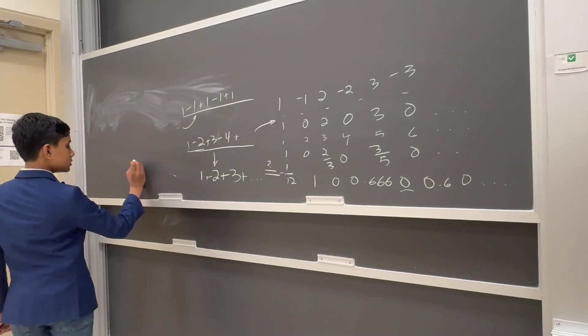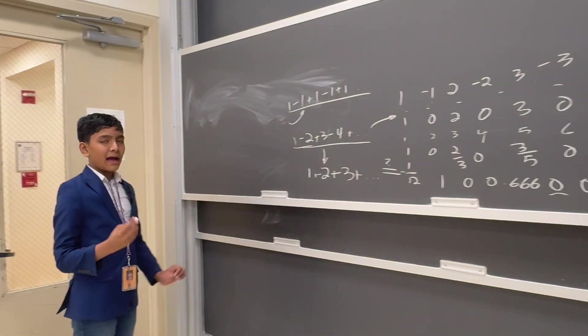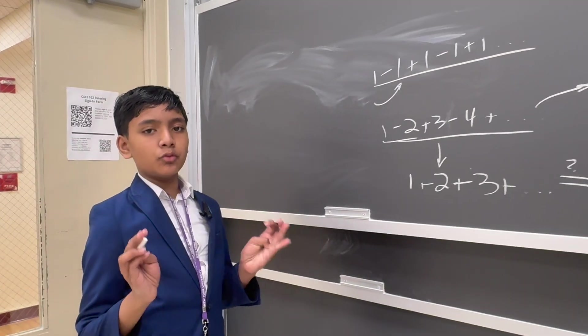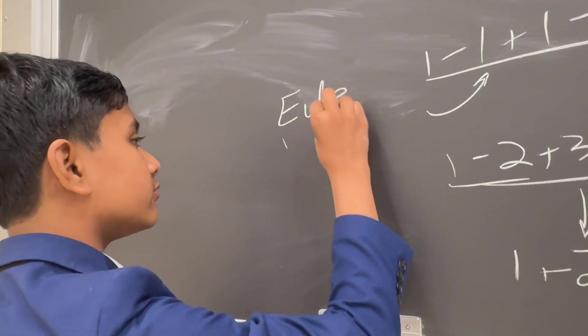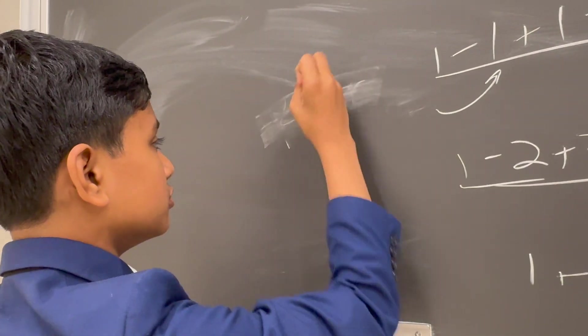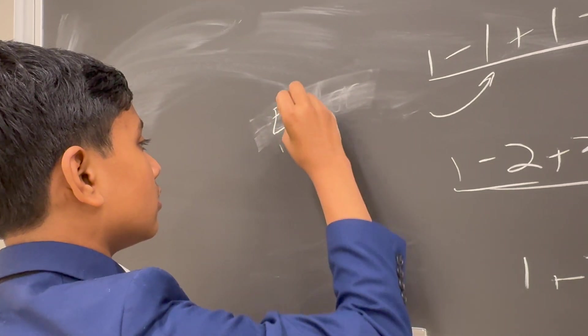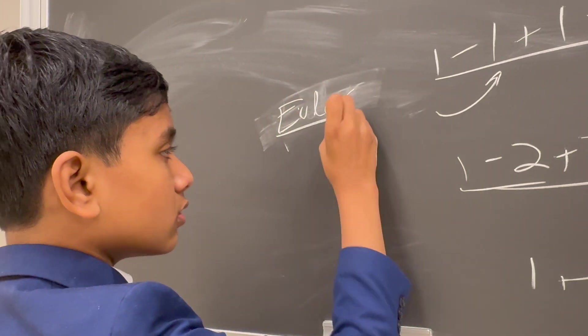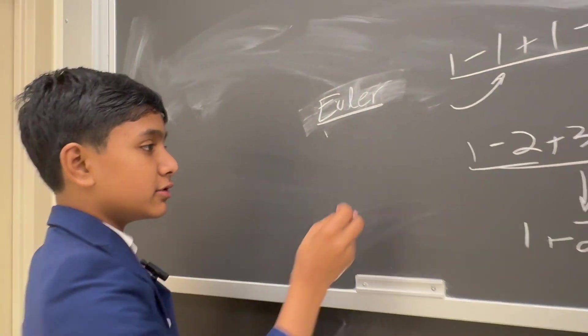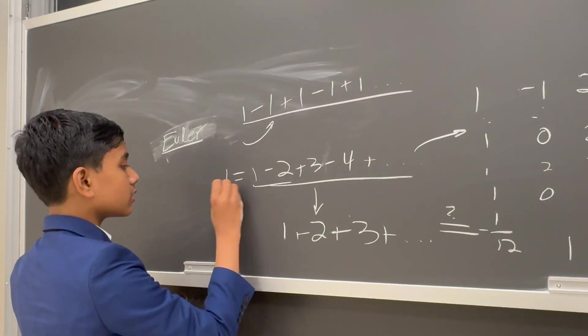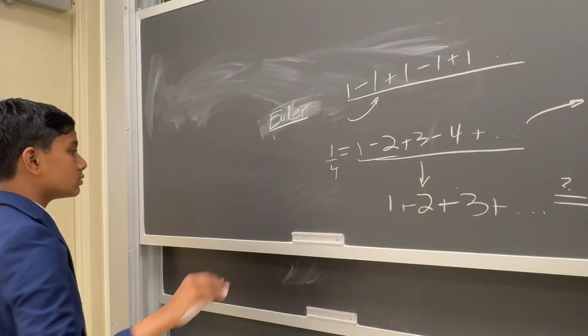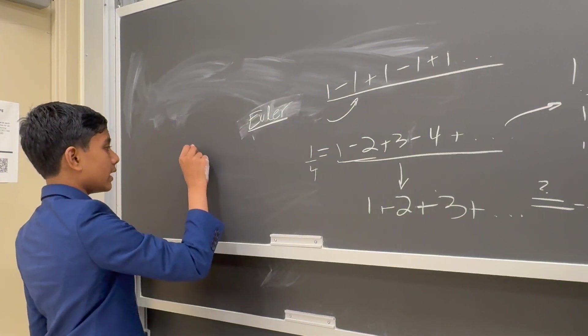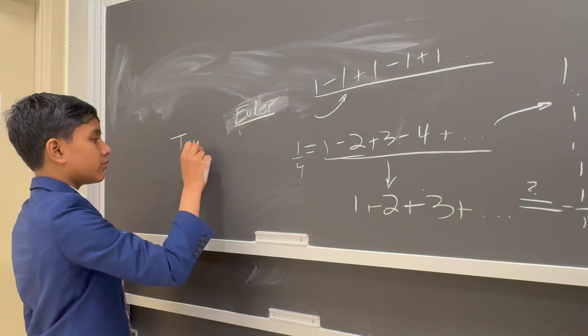Alright, so how do we sum this then? Well, we need something slightly more advanced. In fact, Euler summed this before Abel himself, when he conjectured that it was equal to 1/4. Now, how did Euler see through this?